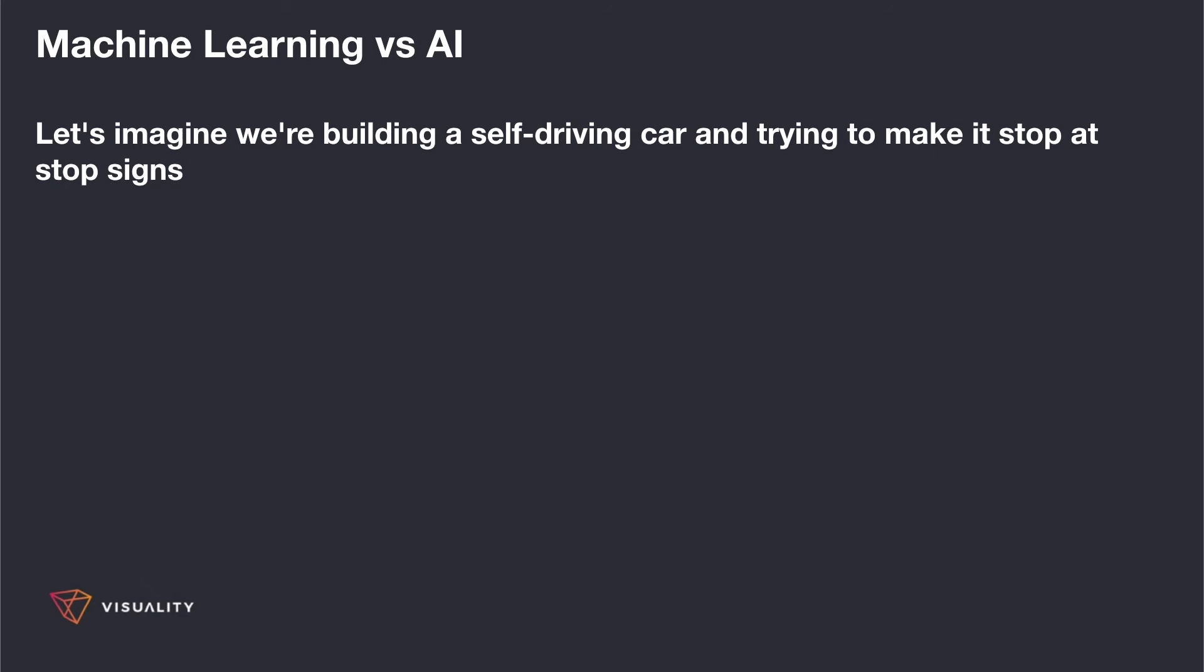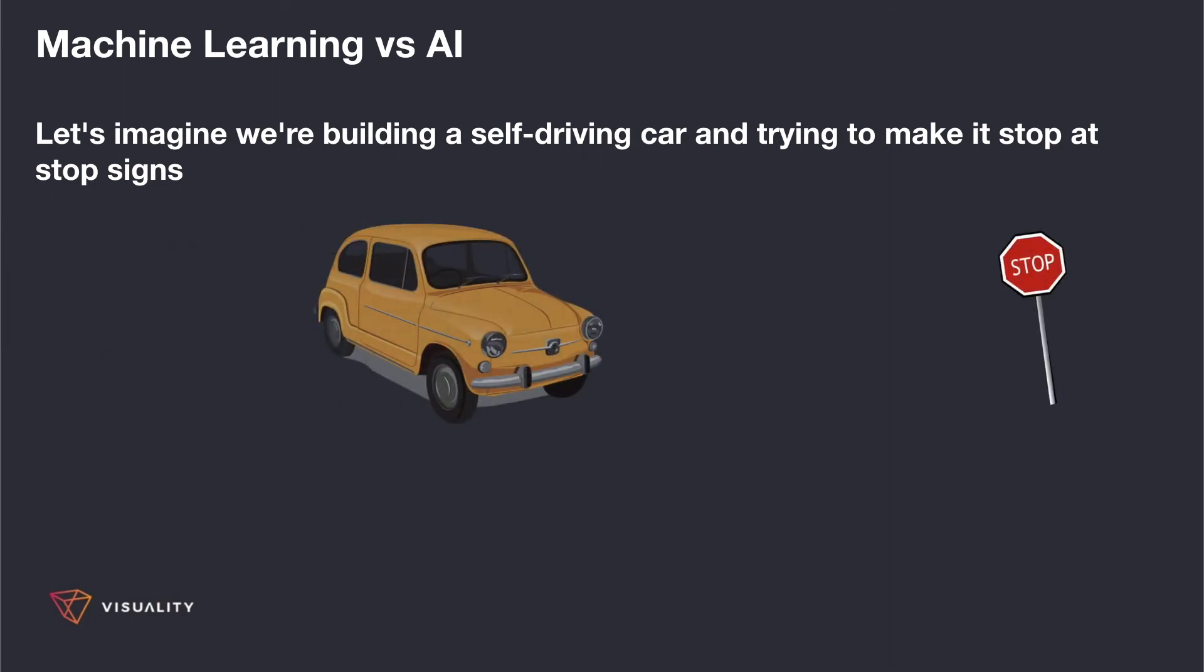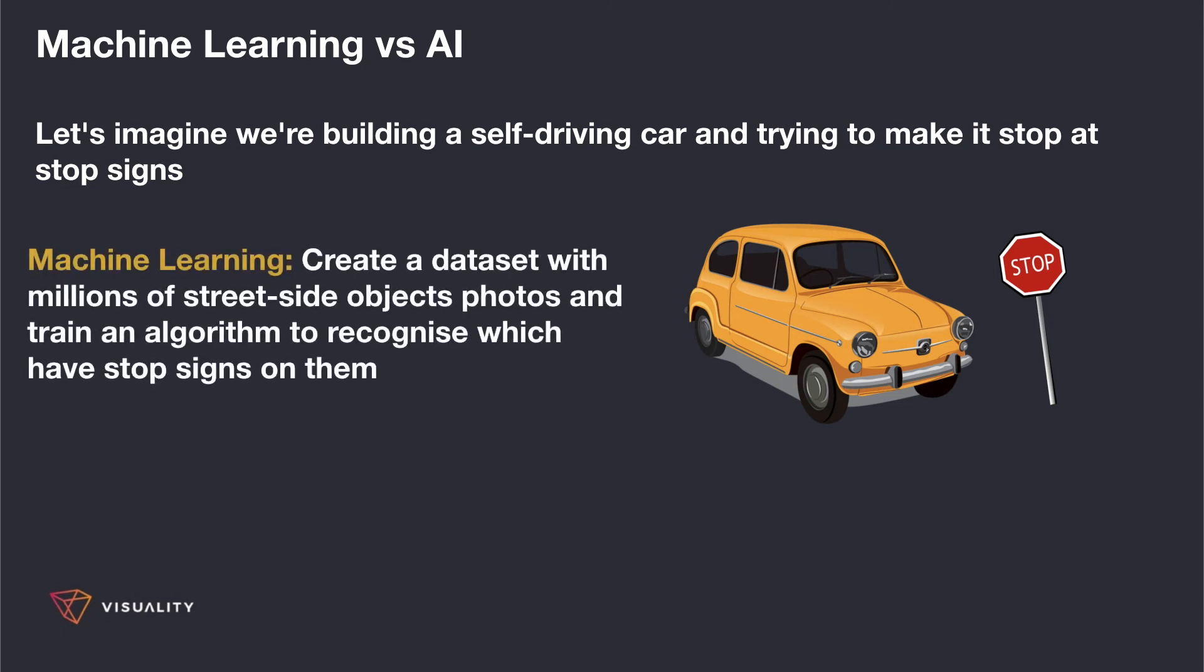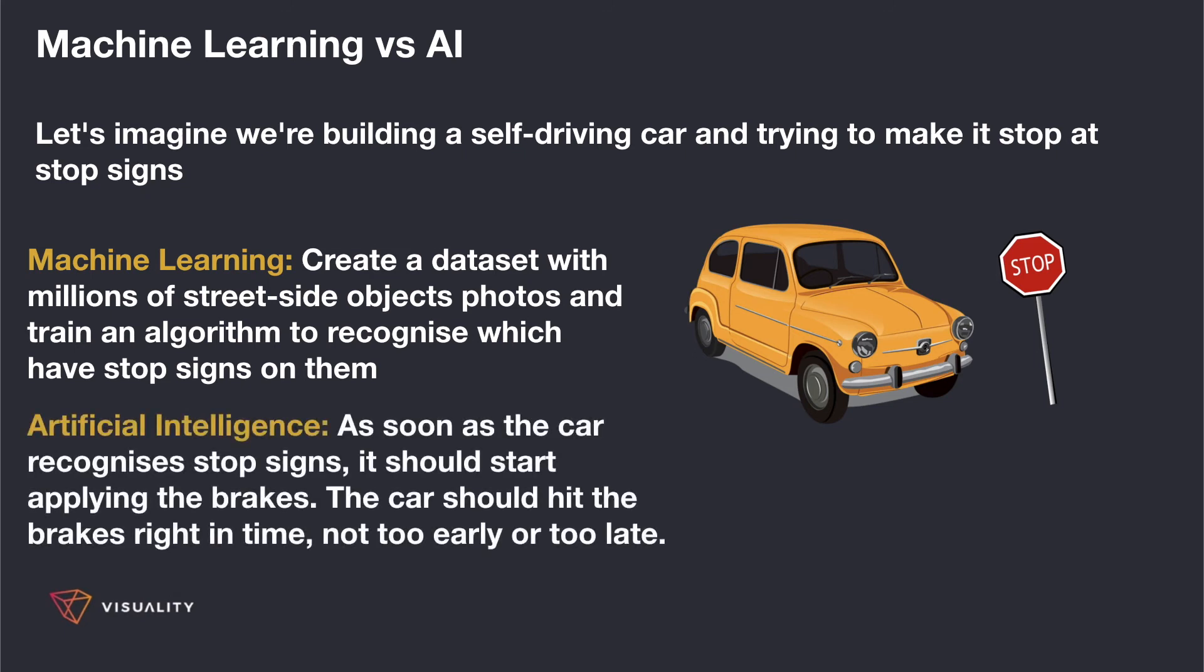If we understand the difference between machine learning and deep learning, let's check the difference with AI. Let's imagine we are building a self-driving car and try to make it stop at stop signs. From a machine learning perspective, we need to have a dataset which includes millions of street sign photos and try to recognize which have stop signs on them. On the other hand, artificial intelligence, after recognizing stop signs, should start applying the brakes.